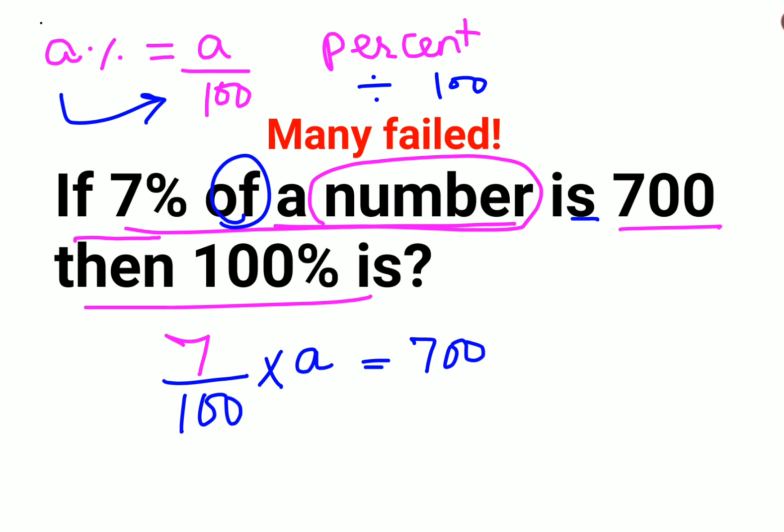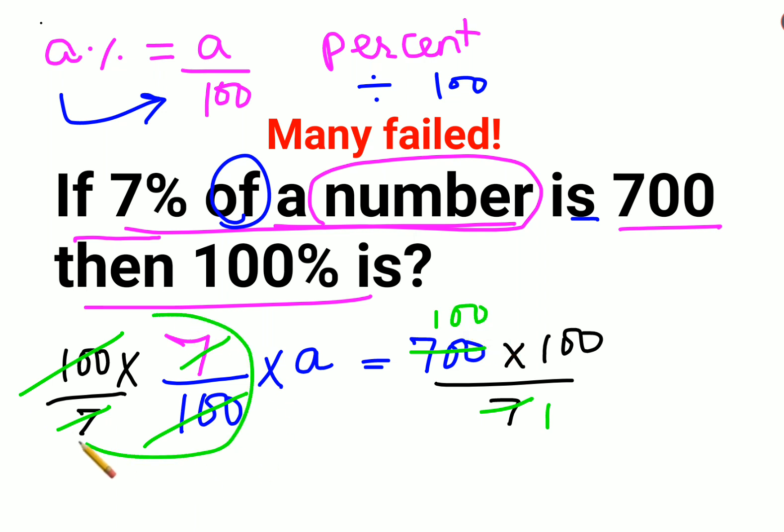Now in order to find the value of a, we will multiply both sides by 100 and divide both sides by 7. So what happens is this 7 and this 7 cancels, this 100 and this 100 cancels. Everything becomes 1. So 1 × a gets you what? a = 100 × 100, which gives you 10,000.